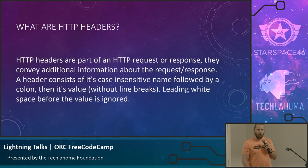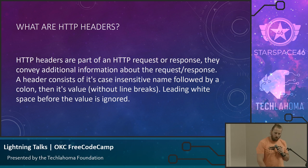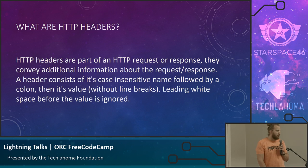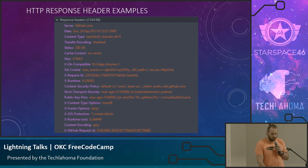The way that we deploy a content security policy is via HTTP headers. Basically, they are an additional part to an HTTP request or response and they convey additional meaning about it. Here's a shot of a few response headers from GitHub. We can see that they also implement a content security policy that we will be looking at a little bit later.